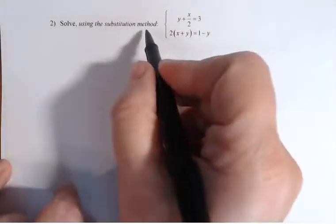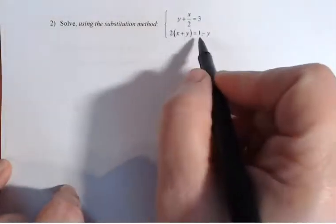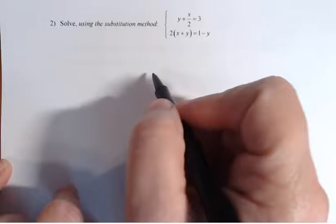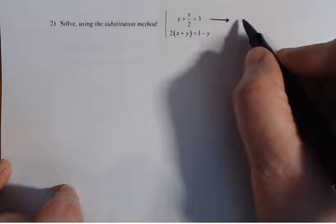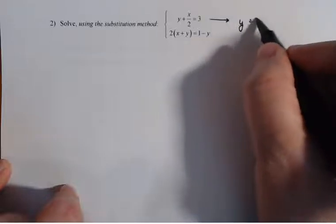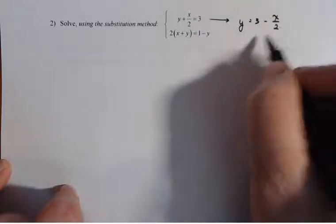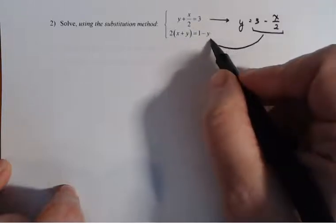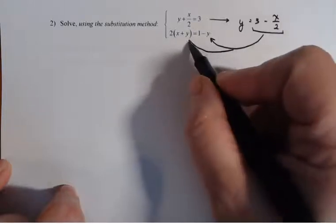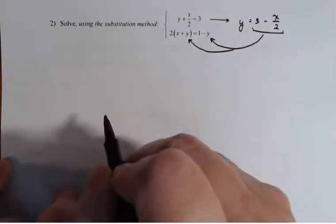I'm going to use a substitution method. That means I'm going to take one of these and solve for one of the variables and substitute it into the other equation. So I'll take this first equation here and solve for y. So y equals three minus x over two. I'm going to take this side and substitute it in for y here and for y here, and continue to solve.